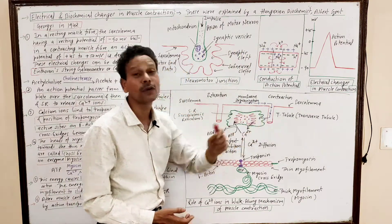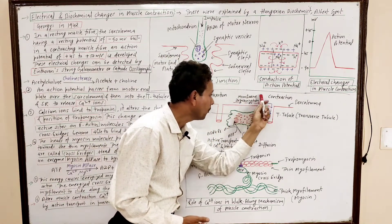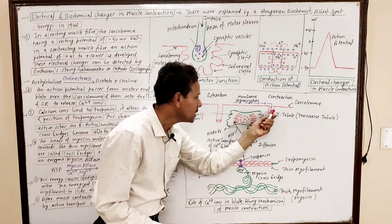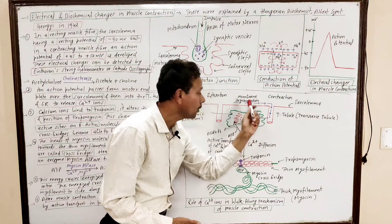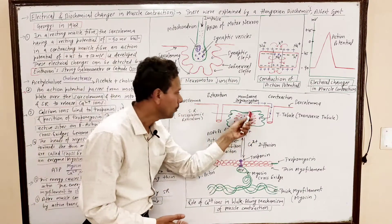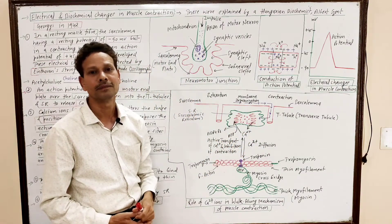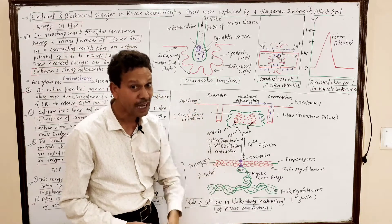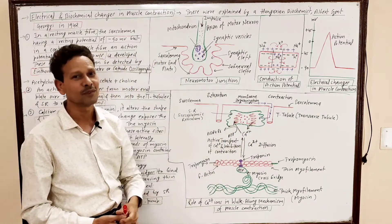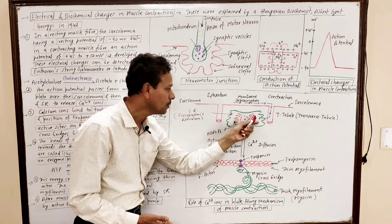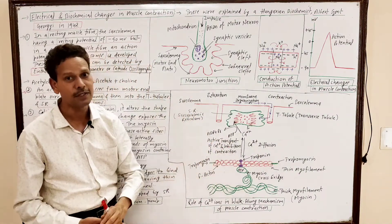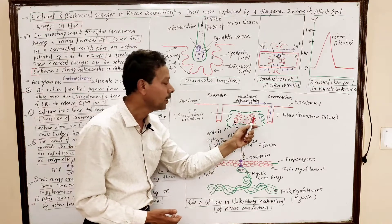Because of this action potential, the membrane becomes depolarized, and the wave of depolarization propagates over the sarcolemma. Through the T-tubules (transverse tubules), this wave of depolarization enters the sarcoplasmic reticulum and stimulates the L-tubules — the longitudinal tubules of the sarcoplasmic reticulum. These L-tubules then start to release calcium ions.